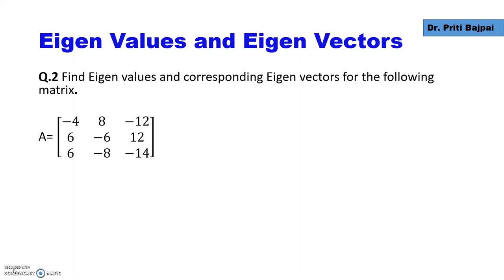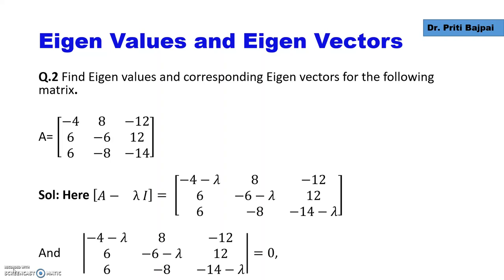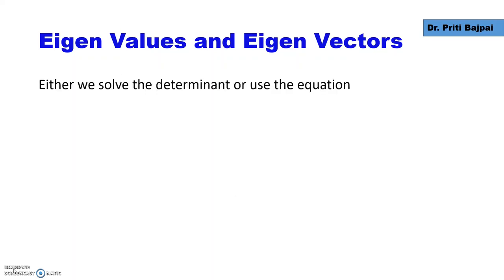Let's say we have to find the eigenvalues and eigenvectors for the matrix A here. First, we form the matrix A minus lambda I, then we solve the determinant of A minus lambda I, equate it to 0, and this gives us an equation in lambda. We can use either the traditional method of solving the cubic in lambda, or we can use the formula: lambda cubed minus C0 lambda squared plus C1 lambda minus C2 equals 0.